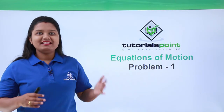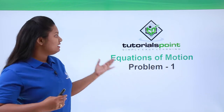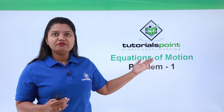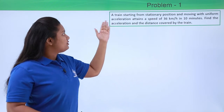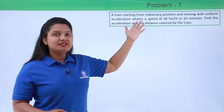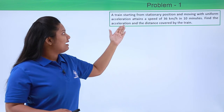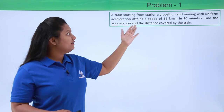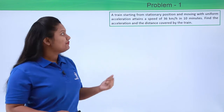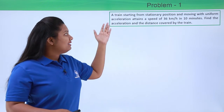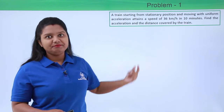Hello everyone. In this video we'll be solving a problem based on equations of motion. Here is the problem: a train starting from a stationary position and moving with uniform acceleration attains a speed of 36 kilometers per hour in 10 minutes. Find the acceleration and the distance covered by the train.